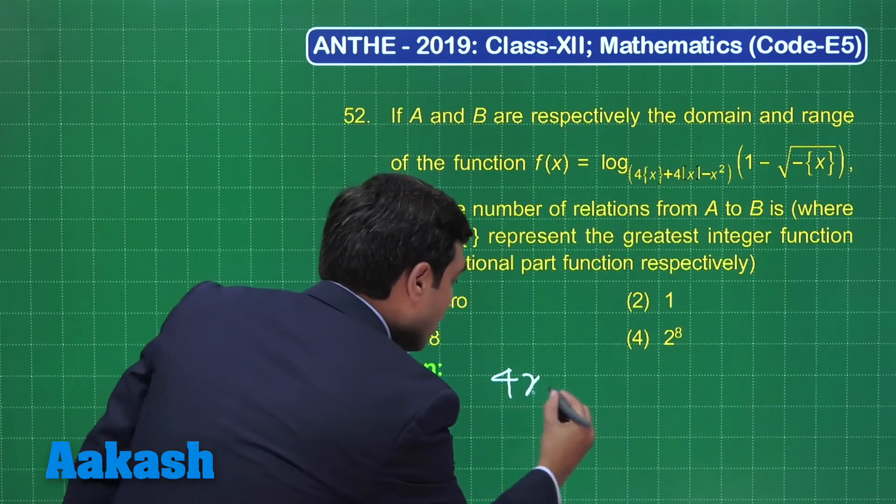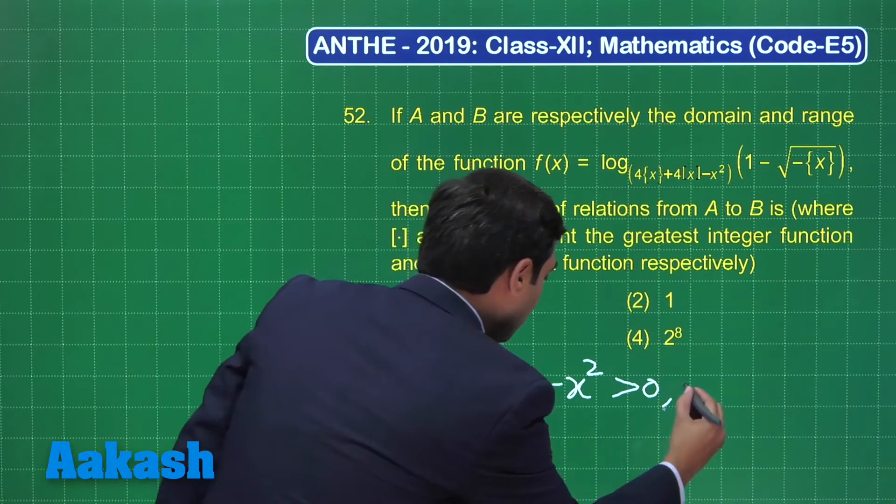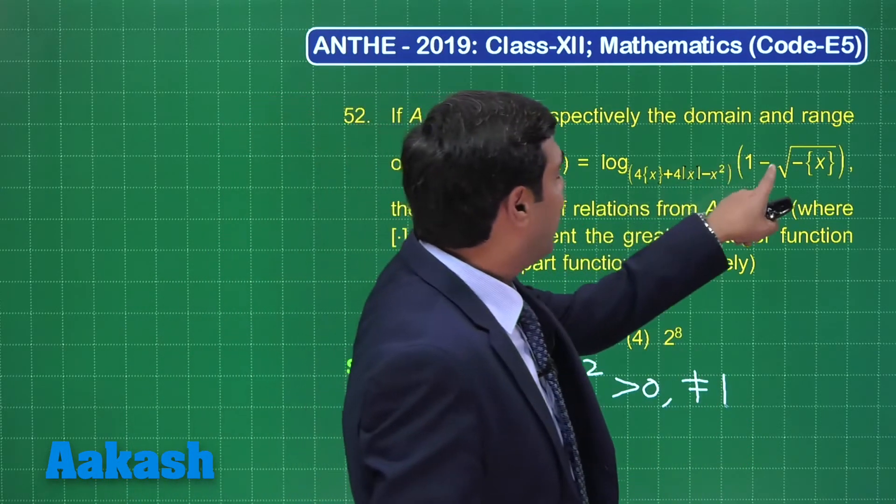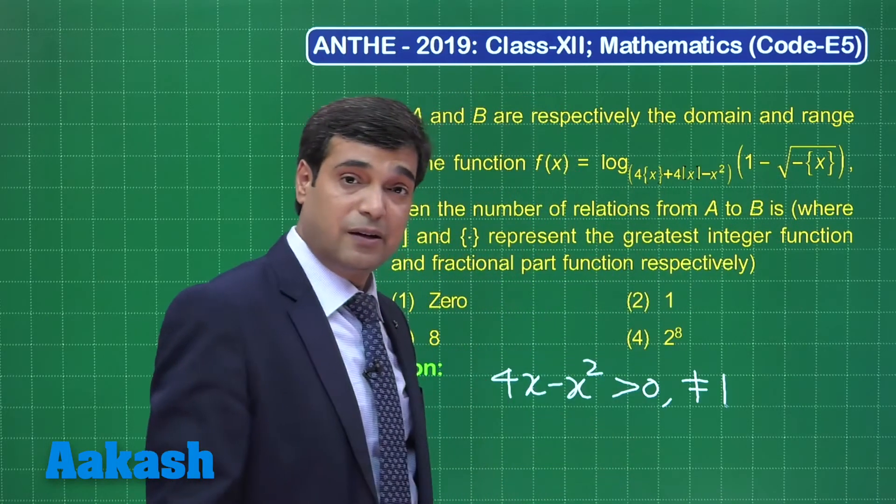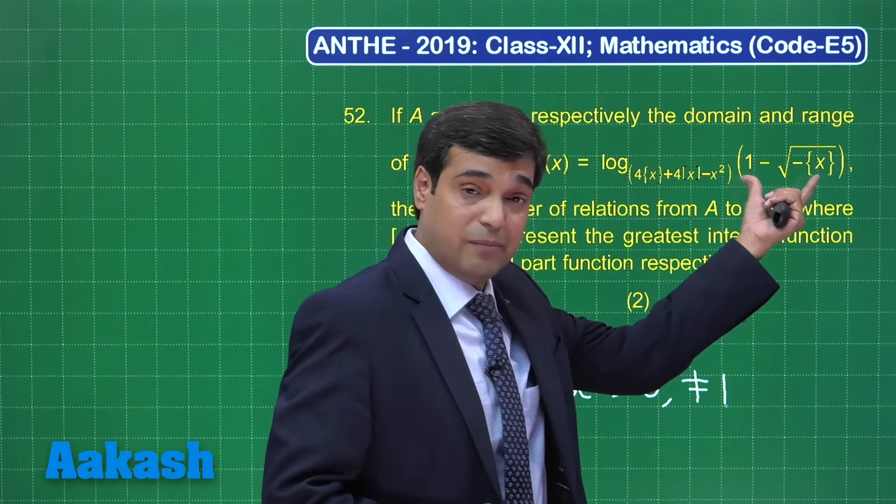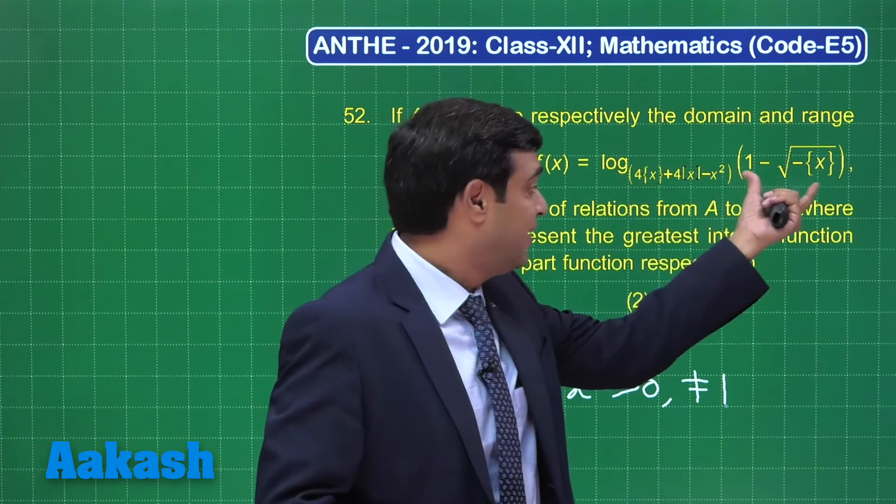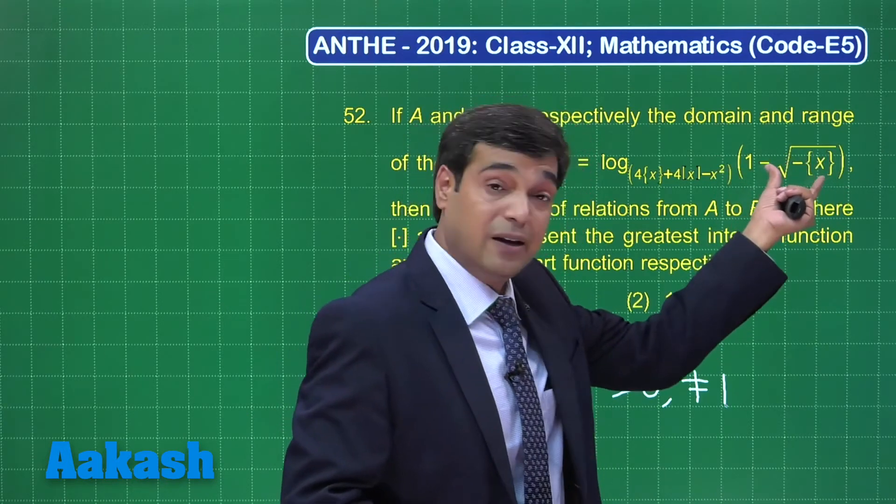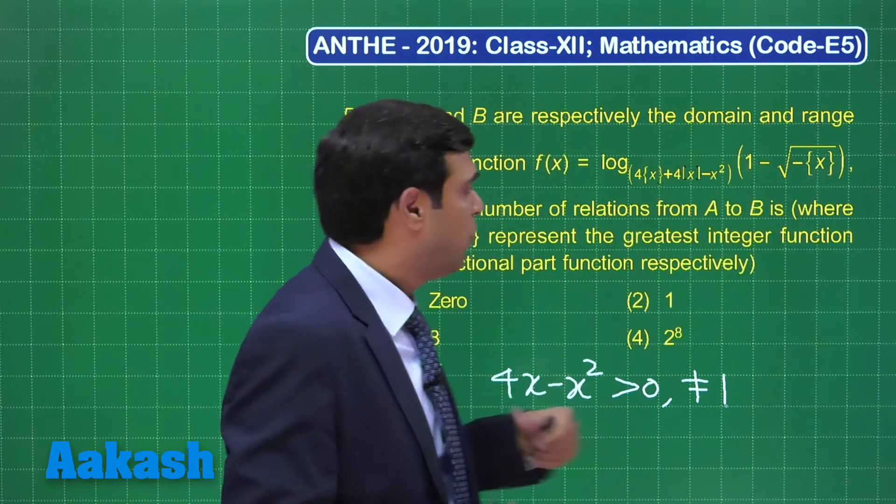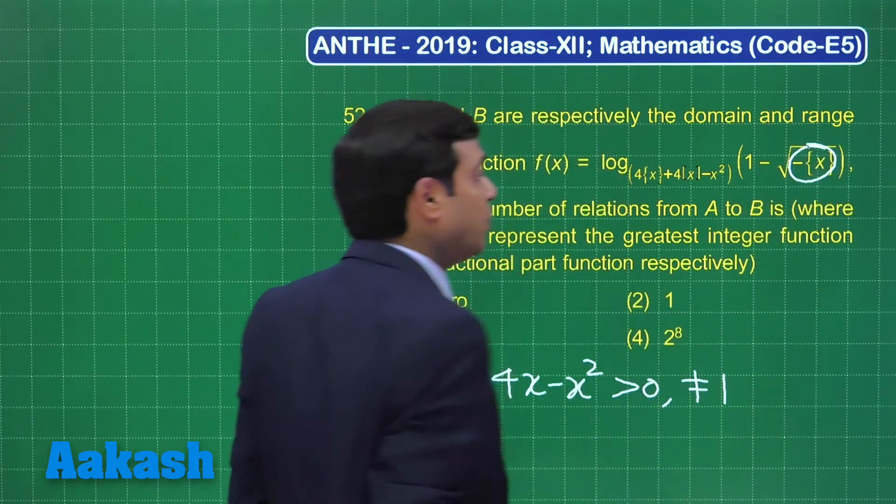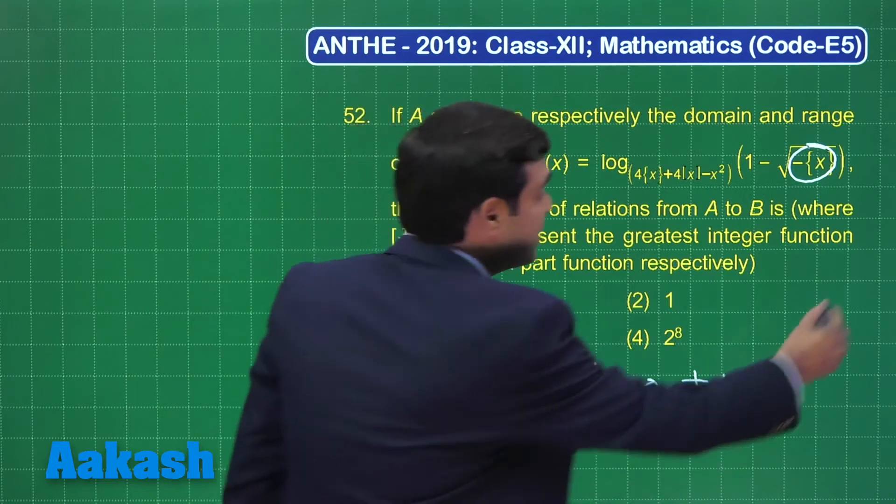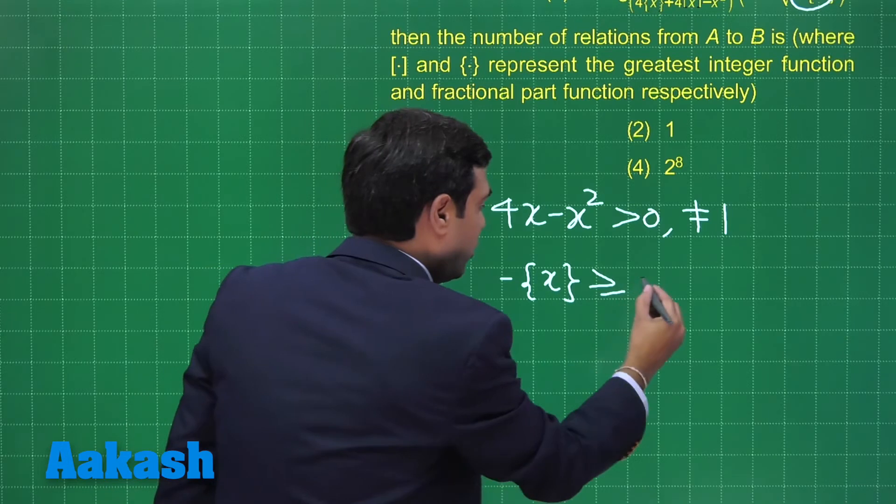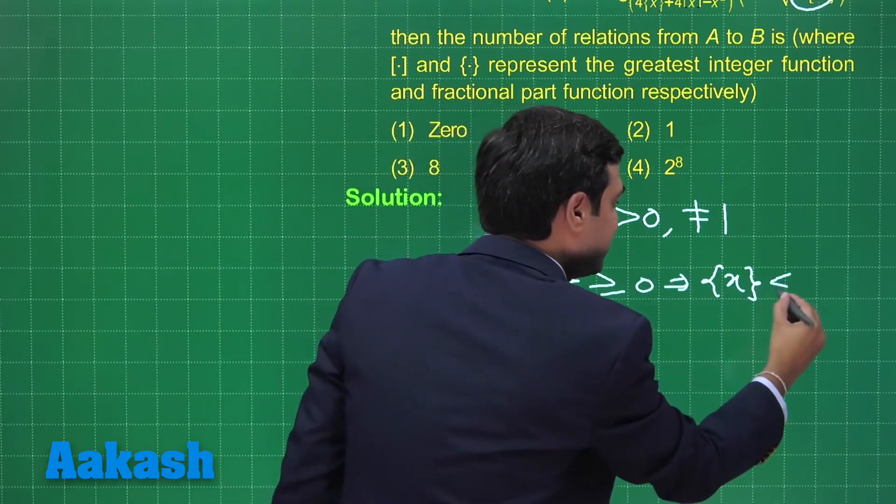Next one: minus root of (minus fractional x). Now this term we need to define because logarithmic is there. So what we need? This entire thing should be greater than zero. This is greater than zero. At the same time, this root sign is also giving me some value, so what we are concluding here: this term should be greater than or equal to zero. Now, when you are saying minus fractional x is greater than or equal to zero, meaning fractional x is less than or equal to zero, which is giving me only possibility equal to zero. So x is an integer. This is one important result: x is an integer.